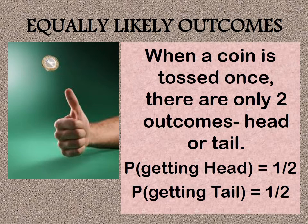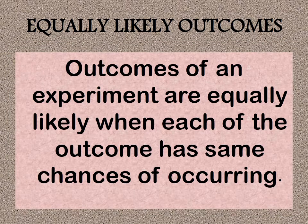Next we'll discuss equally likely outcomes, taking the example of tossing a coin. When we toss a coin there are only two outcomes: head or tail. Therefore we can say that the probability of getting head is 1/2 and the probability of getting tail is 1/2, because we are assuming that the outcomes have equal chances of occurrence.